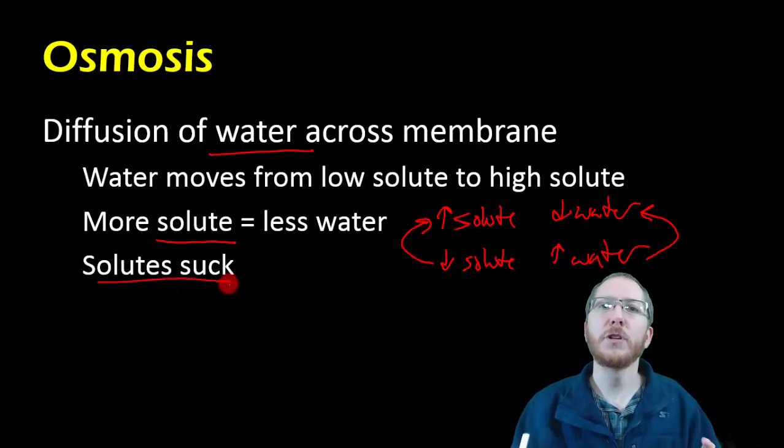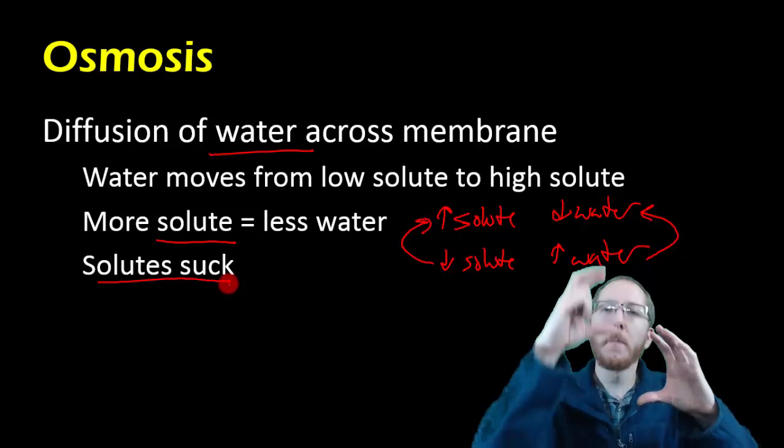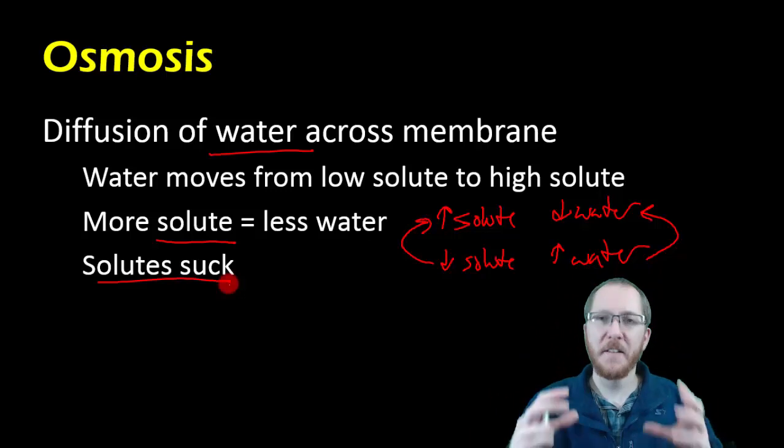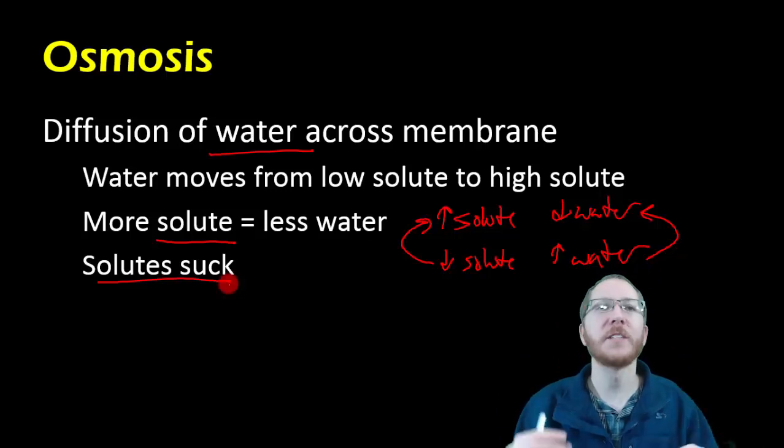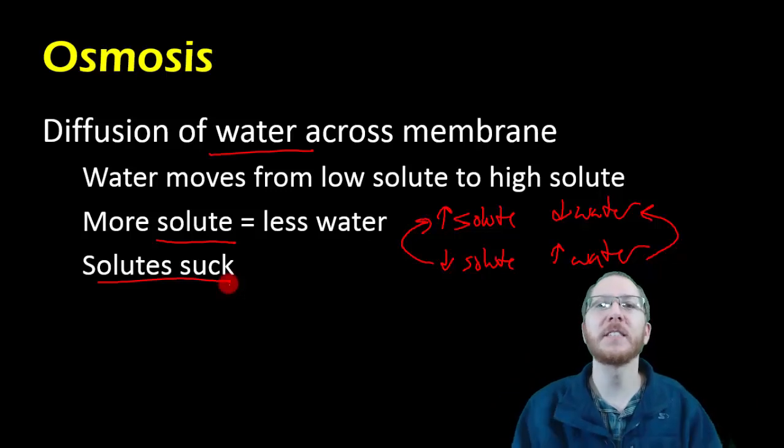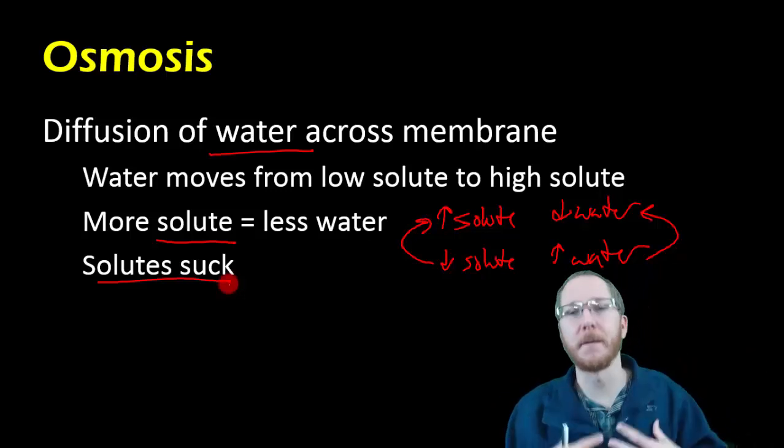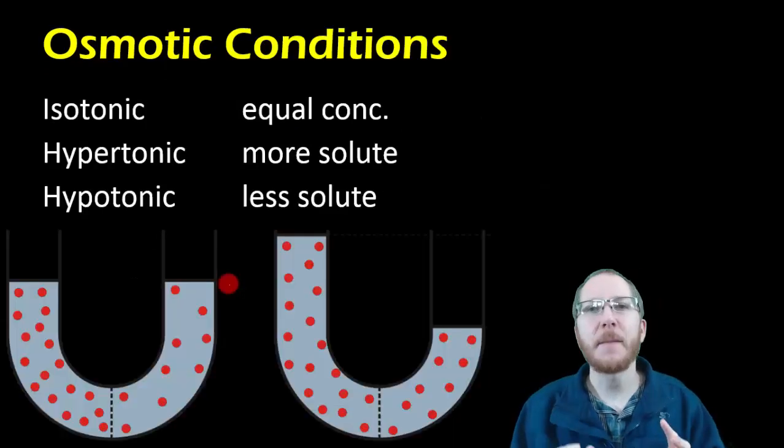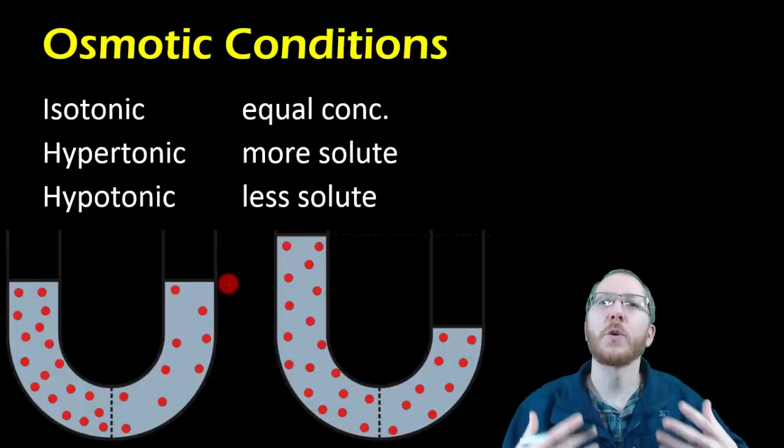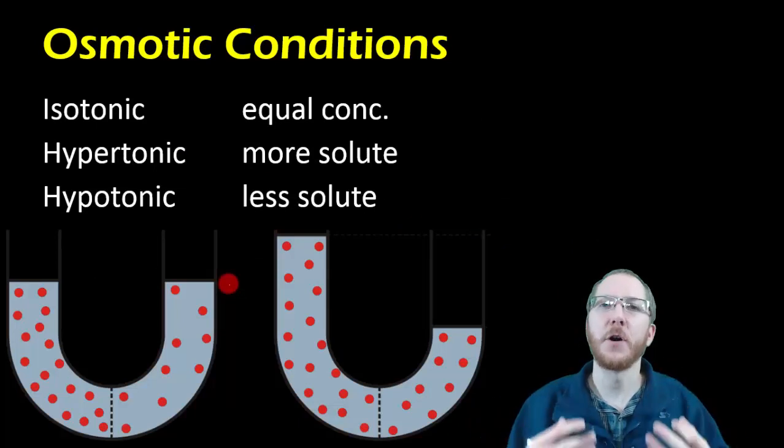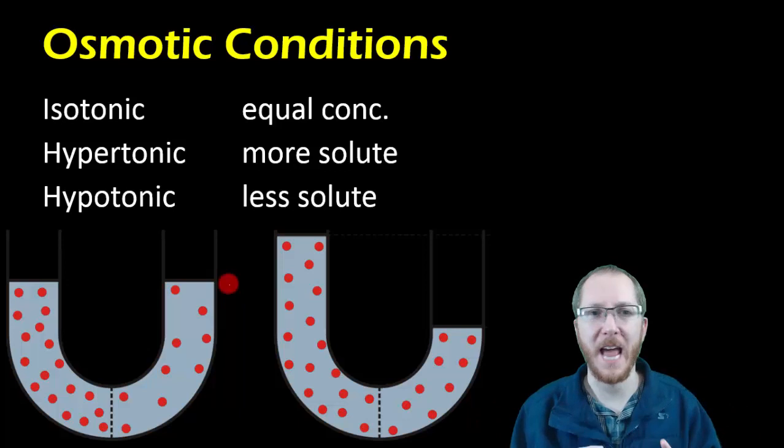So if you're looking at two solutions that have a semi-permeable membrane between them that water can pass through, one of the ways you can figure out where water is going to want to go is figure out who has more solutes. The guy that has more solutes is going to have the water move towards him. Solutes suck. So if I give you an example and I want you to try to discuss what's going on with osmosis, there's three basic terms you have to know. There's three basic situations we can have.